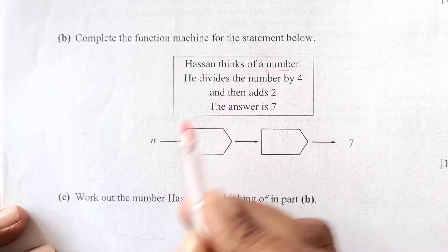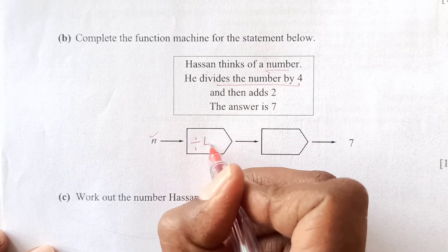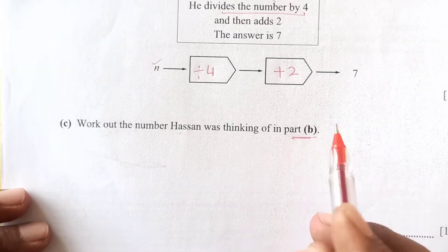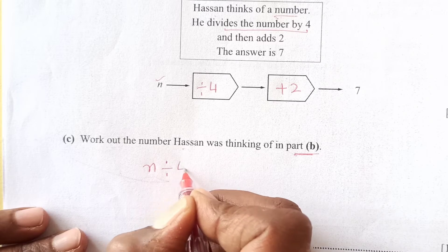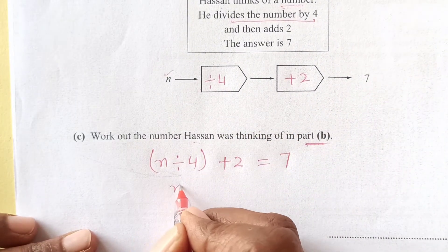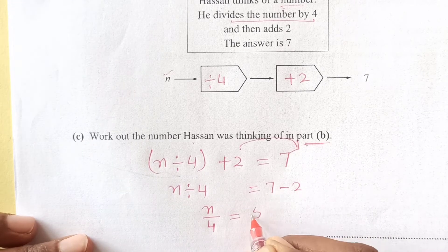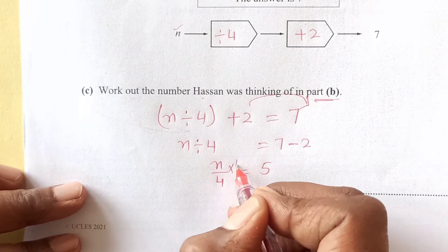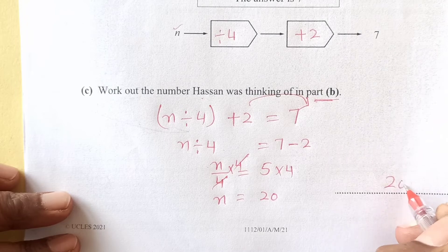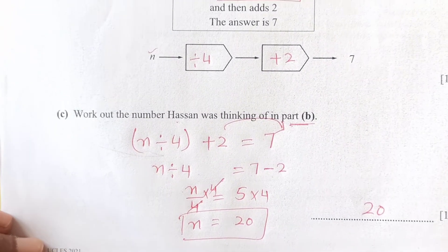Complete the function machine: Hassan thinks of a number n. He divides it by 4 and then adds 2, giving the answer 7. To find n, write the equation: n divided by 4 plus 2 equals 7. Subtract 2 from both sides: n over 4 equals 5. Multiply both sides by 4: n equals 20. Check: 20 divided by 4 is 5, and 5 plus 2 equals 7. Correct.